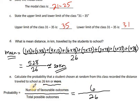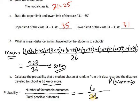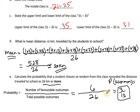So the probability that a student traveled 26 kilometers or more is 6 over 26. We can simplify this by dividing both numerator and denominator by 2, giving us 3 over 13. So the probability is 3/13.